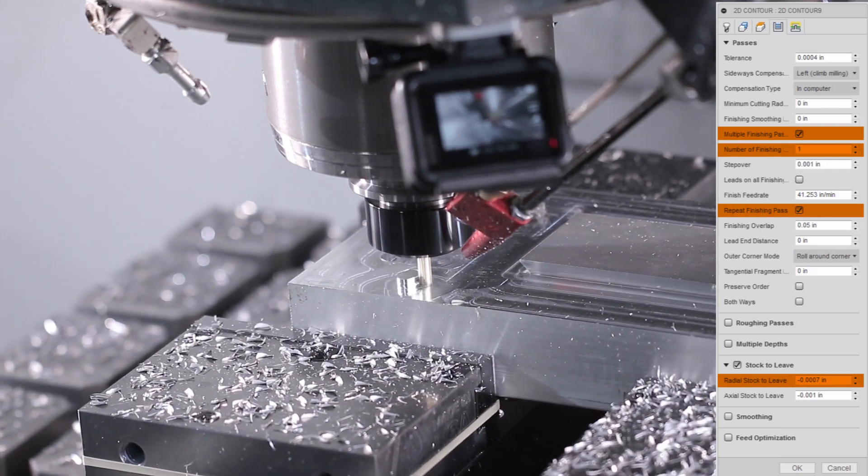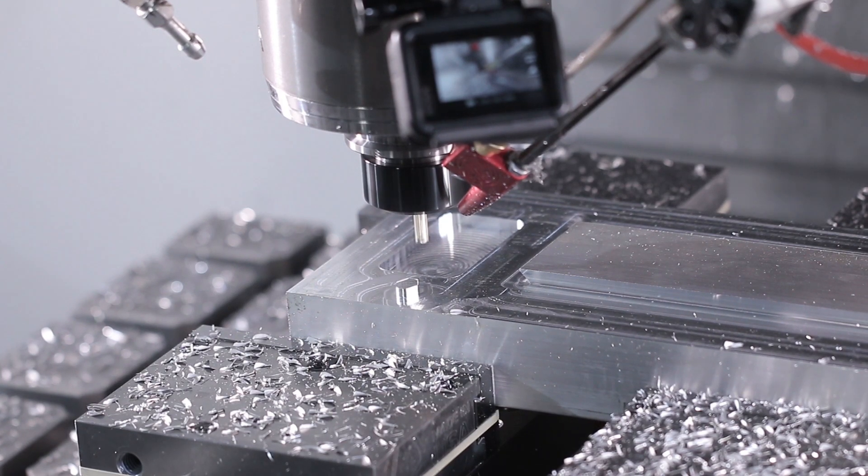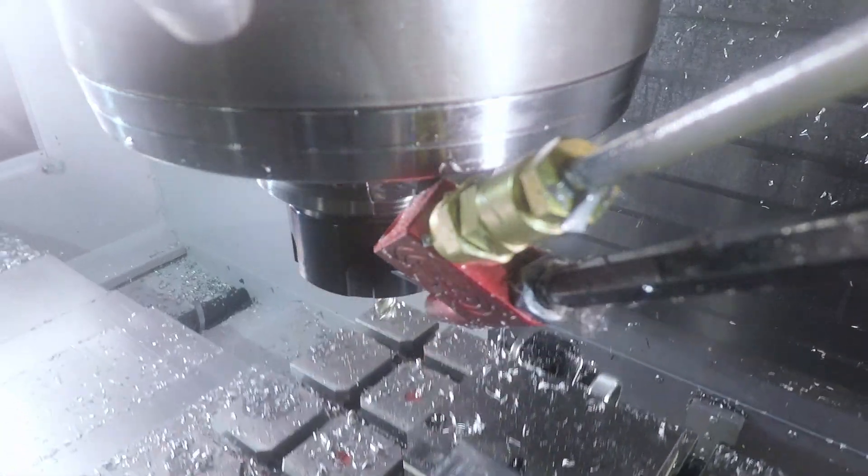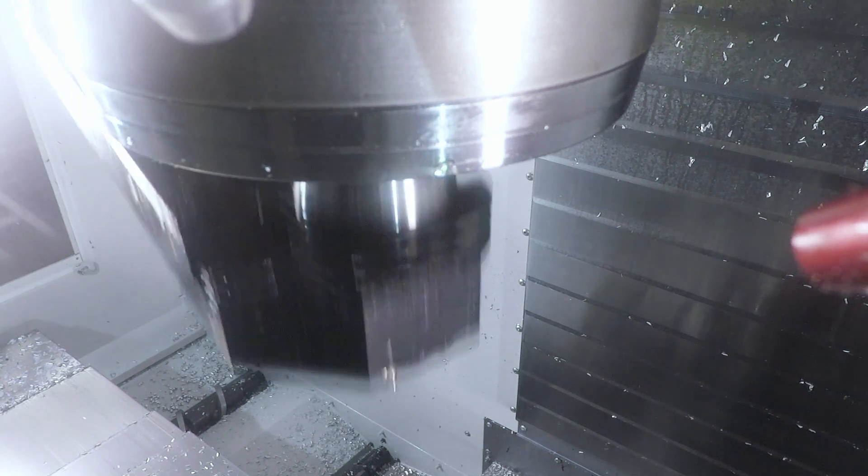We ended up walking it in by 0.0007 inches to get the perfect fit we were looking for. Having one diamond pin located north-south, the other located east-west will give us plenty of locating accuracy for this machine.